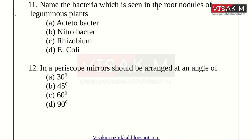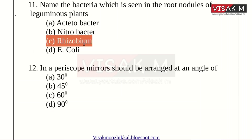Tenth: Name the bacteria which is seen in the root nodules of leguminous plants. Option B: Nitrobacter. C: Rhizobium. D: E. coli bacteria. This bacteria found in the root nodules of leguminous plants is Rhizobium. Rhizobium is the right answer.